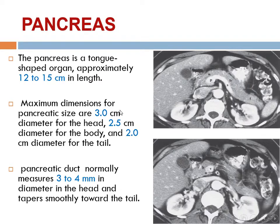The maximum dimensions of pancreas size are 3 cm diameter for the head, 2.5 cm for the body, and 2 cm for the tail. On ultrasound and thin section CT, we can see the pancreatic duct, which is normally measured 3 to 4 mm diameter in the head and tapers smoothly toward the tail.